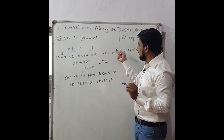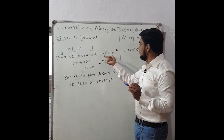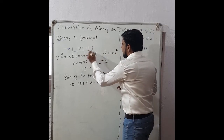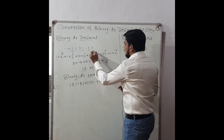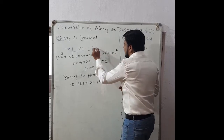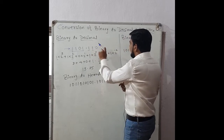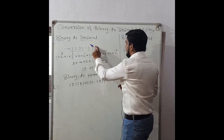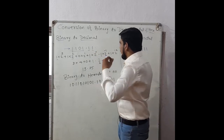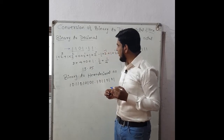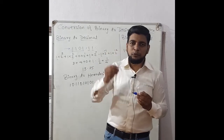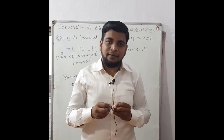For the fractional part on the right side: 1 into 2 raise to minus 1, plus 1 into 2 raise to minus 2. If a 0 is there, then 0 into 2 raise to minus 3, and likewise we continue. In the left direction we continue with 2 raise to 0, 2 raise to 1, up to 2 raise to n.